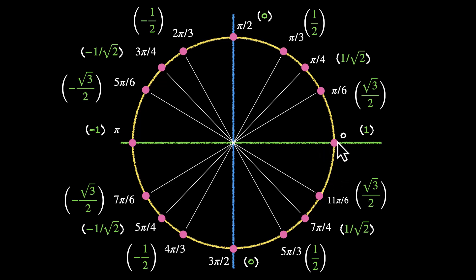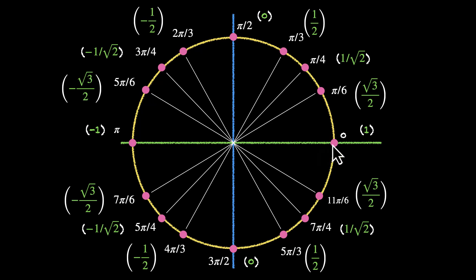Pause the video. Think about what's happening between these points. We have the values of x-coordinates for a few of these points, but can we visualize what's happening for all the points? The x-coordinate tells us how far away we are from the y-axis. For this point we are one unit away in the positive x-direction, and for this point we are one unit away in the negative x-direction. For these two points we are actually on the y-axis, so our x-coordinates are 0.